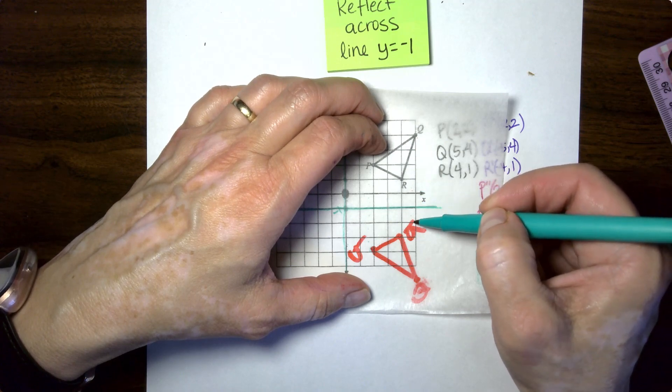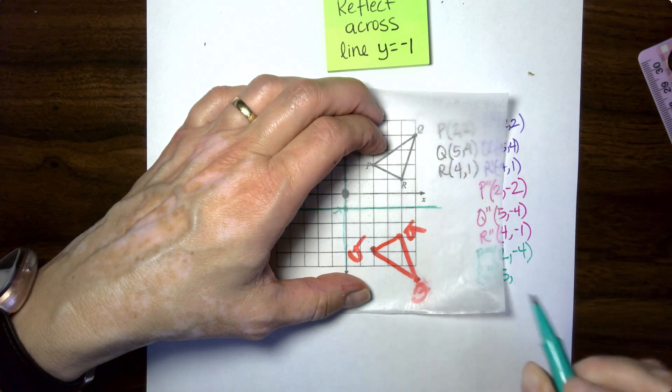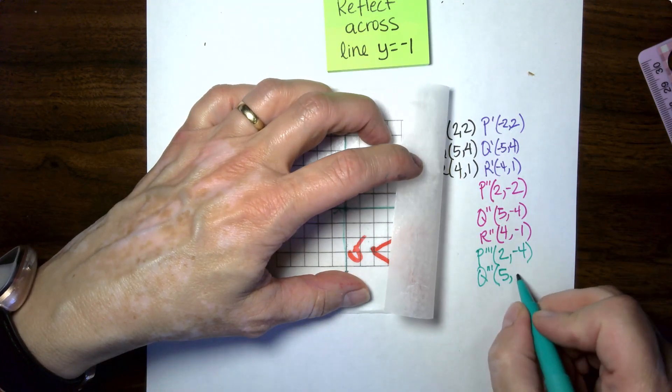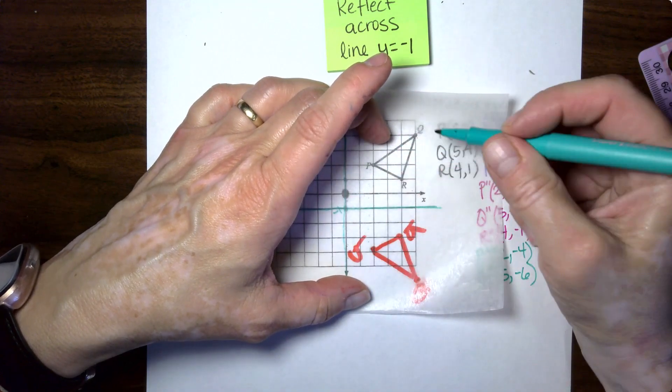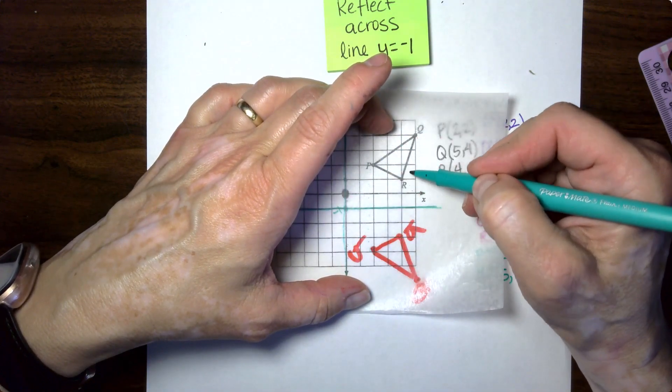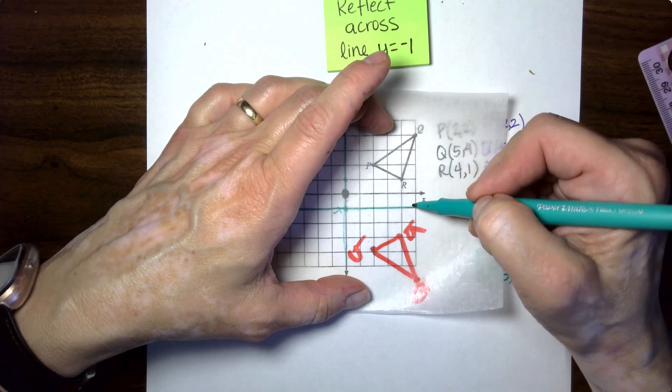So this is one, two, three, four, five, six. So that would be negative six. Let's double check to make sure I did that right. One, two, three, four, five. You are five boxes away from negative one.